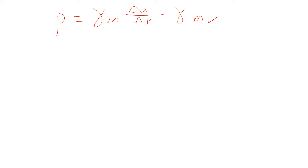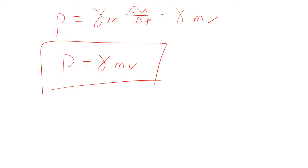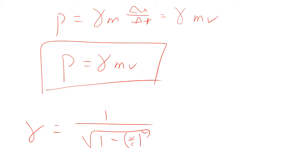If you plug that in, then momentum is going to be gamma m delta x over delta t, or in other words, gamma mv. That means momentum varies with velocity. At low velocities, gamma — which is 1 divided by the square root of 1 minus v-squared over c-squared — is very close to 1. So momentum is just mv, which is the approximation we've always been using.